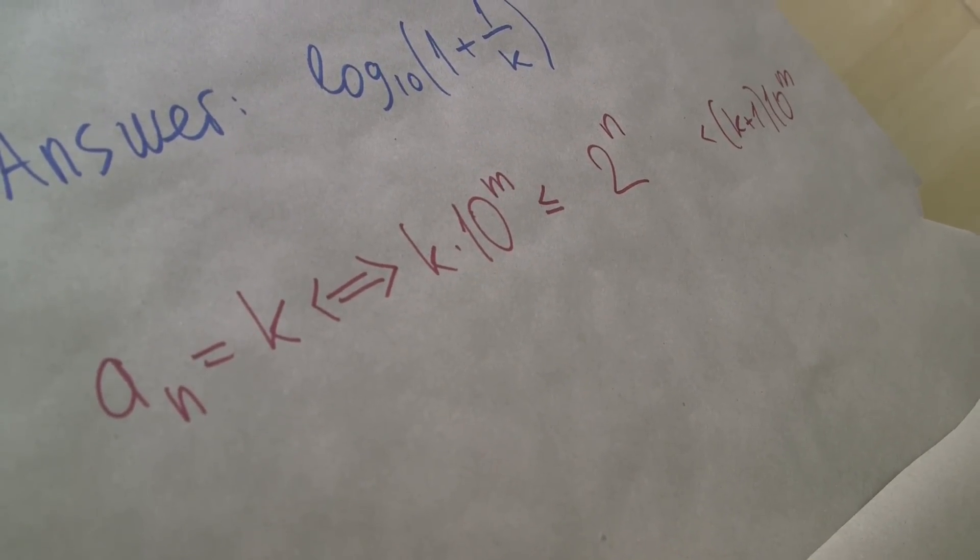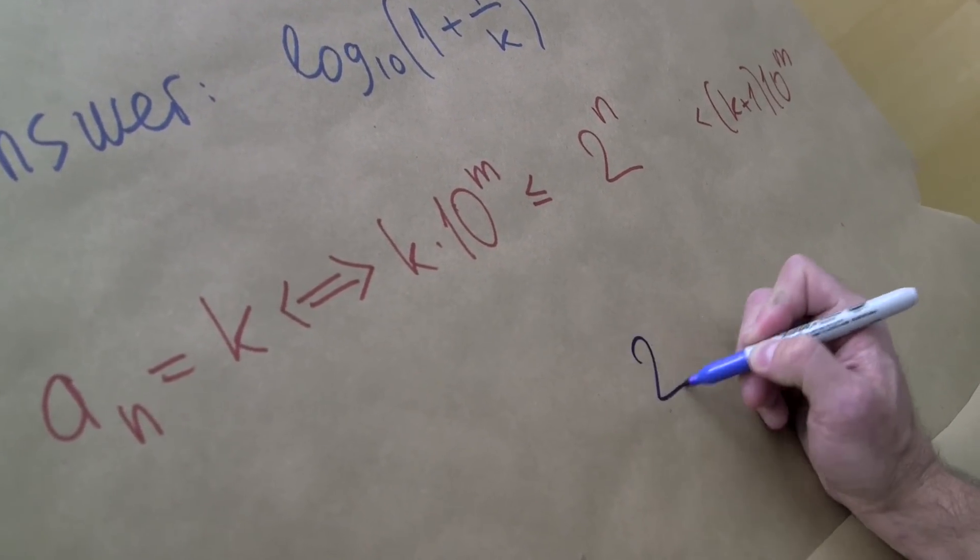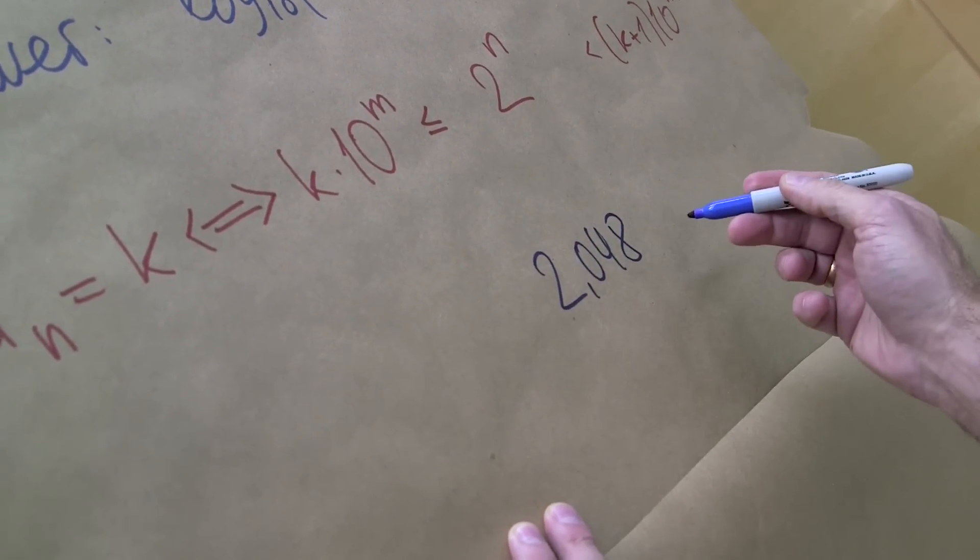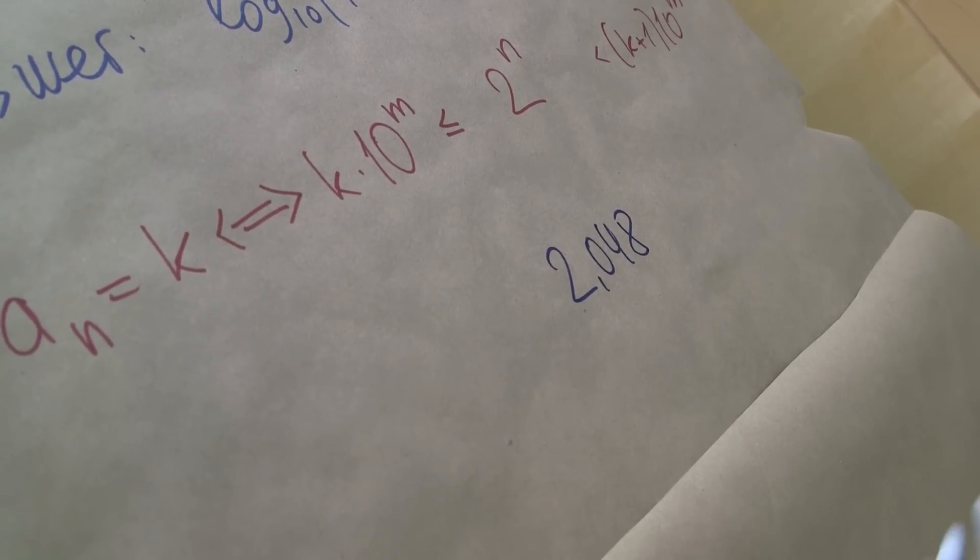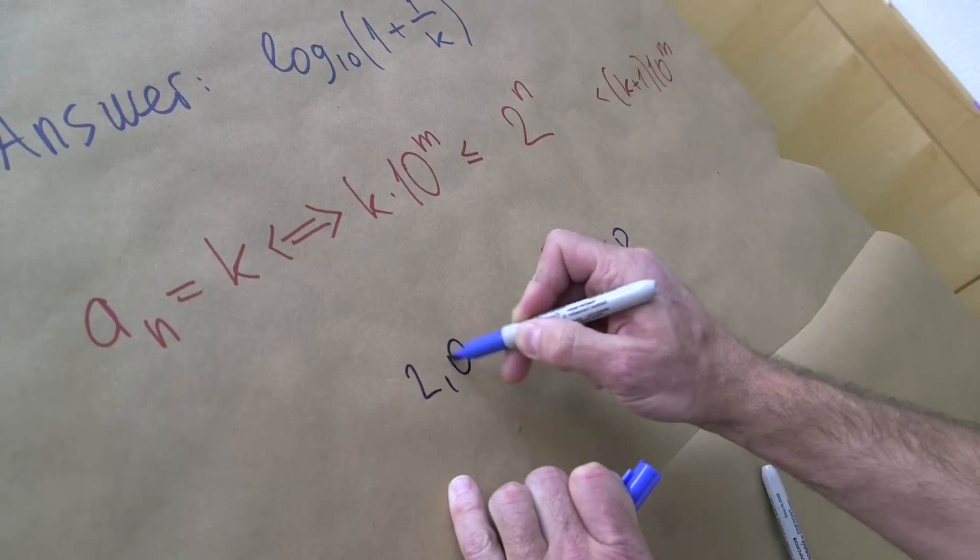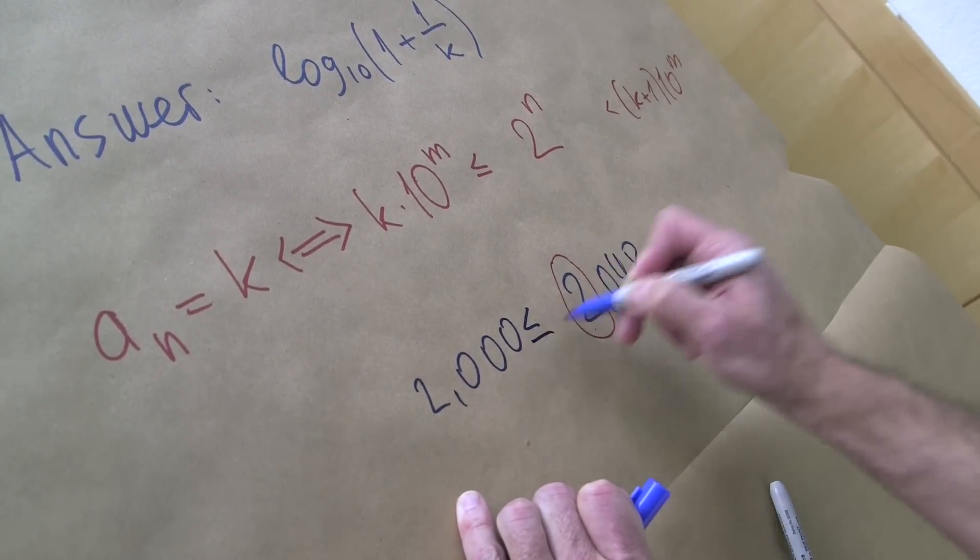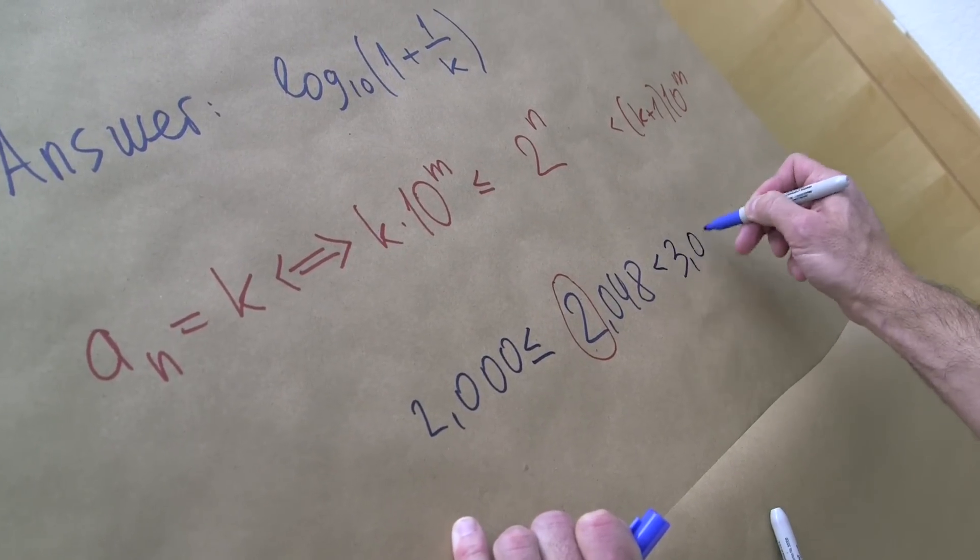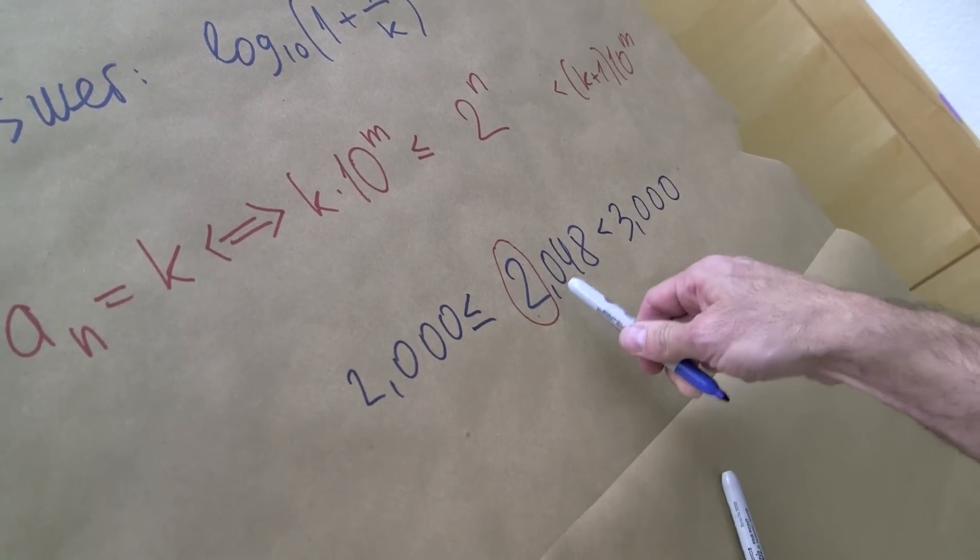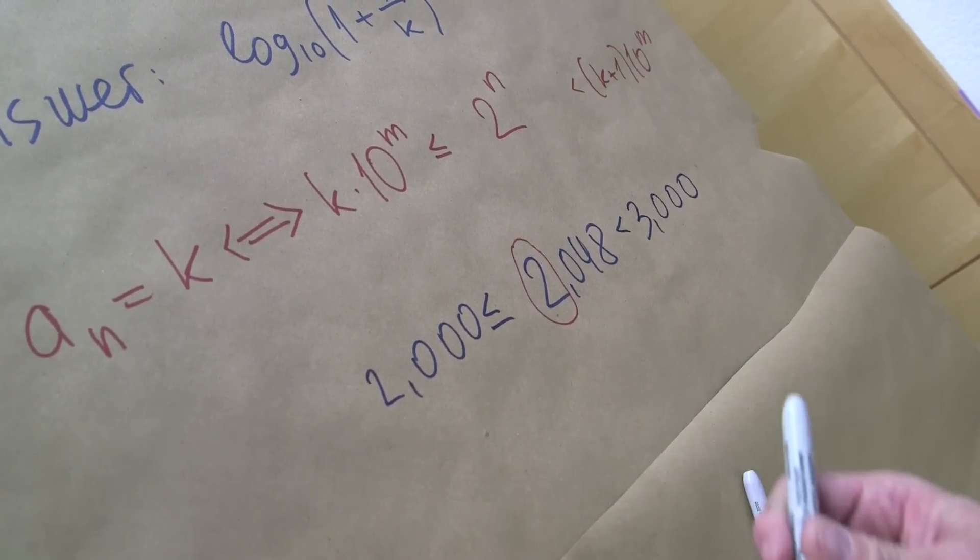Let me explain. So we have 2048, this is 2 to the 11. Why is the first digit 2? Because this is between 2,000 and 3,000, strictly less than 3,000 and bigger than 2,000. That's how we get this 2. So this is the inequality that is important here.